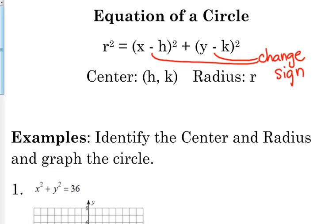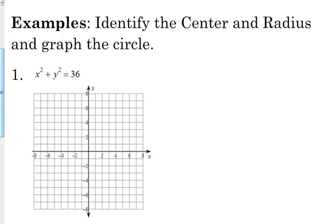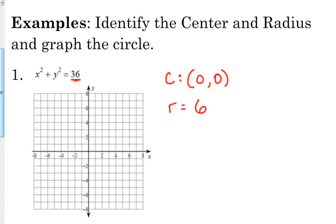Now the first couple here — if you look at example number one on the paper, x squared plus y squared equals 36. There's nothing being added or subtracted from the x and the y. That means that you are centered at the origin. The center here is zero, zero. Because x minus zero is the same as just x. So when there's nothing being added or subtracted from your x and y, your center is zero, zero. The radius here, since it's equal to 36, the radius is six.